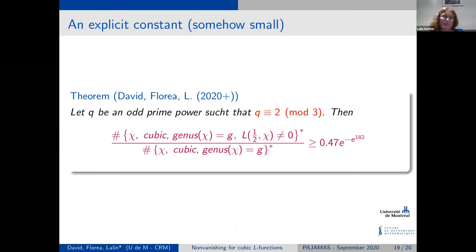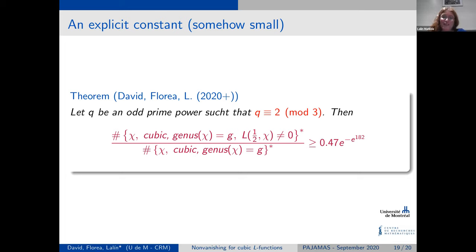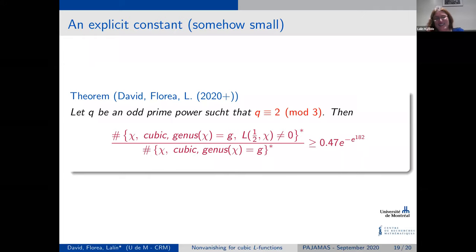The resulting constant for the positive proportion is 0.47 times the exponential of negative the exponential of 182. If you put this in a computer it gives essentially zero, but it is positive — so it is a positive proportion, just extremely small. Thanks for your attention.